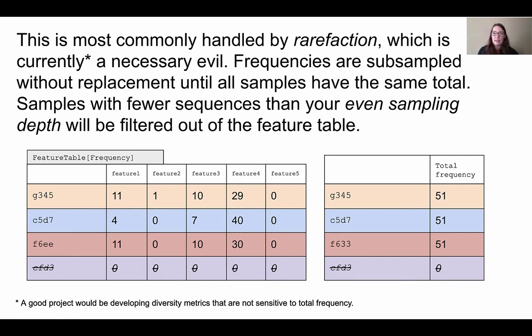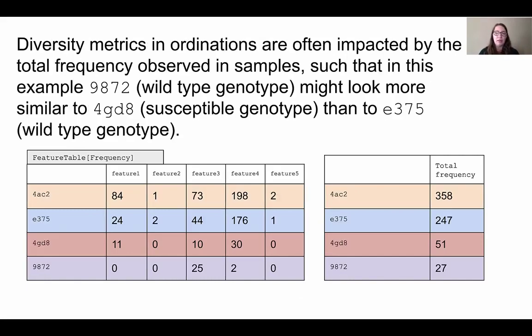Another thing to think about is that we actually risk losing rare species when we rarify. Let's look at our initial table again and look at feature 2 in this yellow sample. Initially it was only present 1 out of 358 times, and when we choose a sampling depth of 51, the odds of detecting this feature are a lot lower than detecting something like feature 4, which is there 198 times.